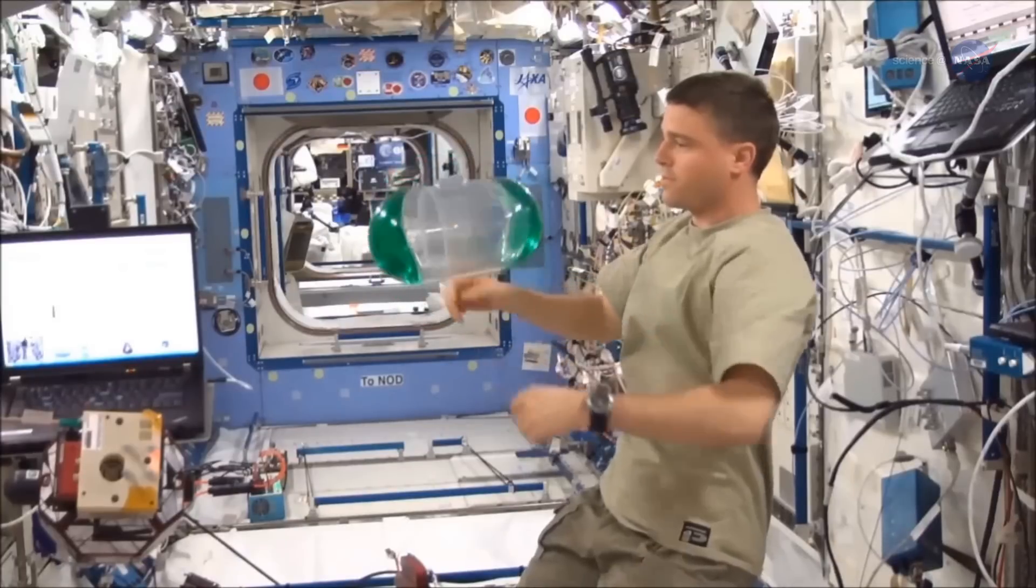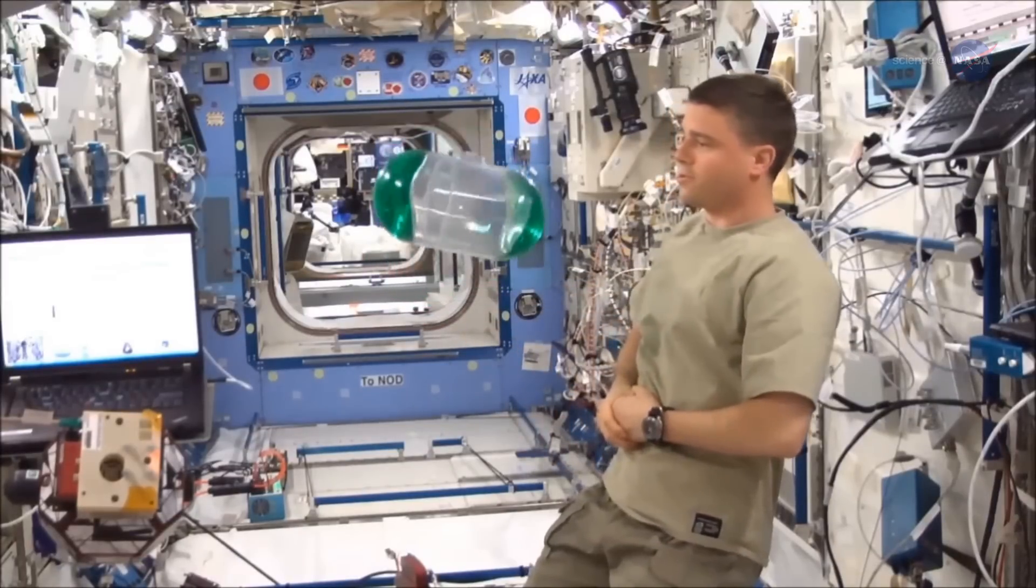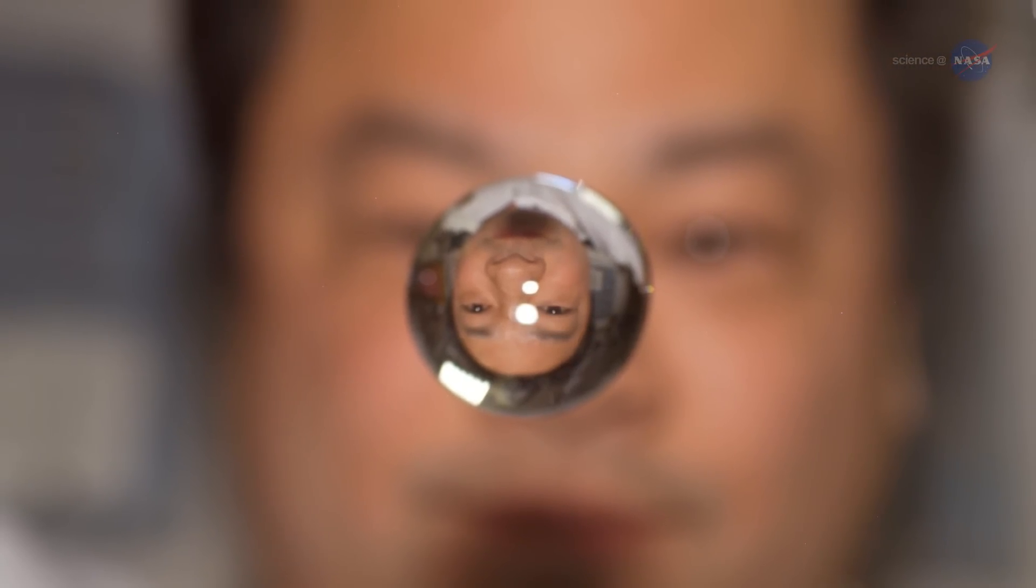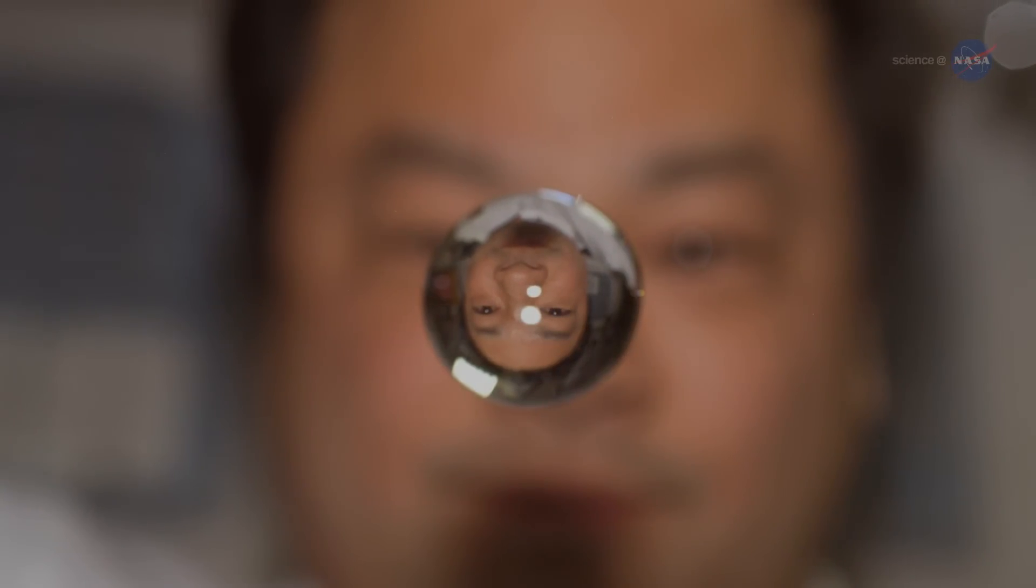We use water mixed with a bit of green food coloring, says Schallhorn. Why water? For one thing, it is a safe fluid for the space station. Water is on the approved list of fluids we can send to the station, he explains.